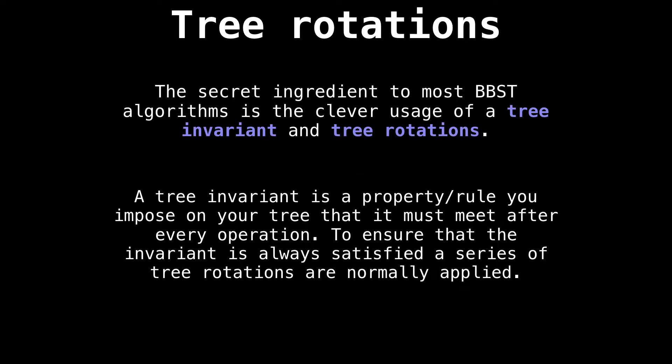So the secret ingredient to most balanced binary search tree implementations is the combination of two things: one, a clever tree invariant, and tree rotations.